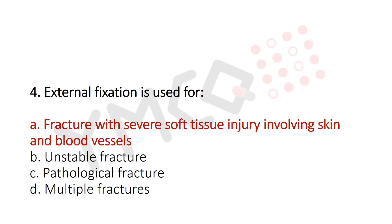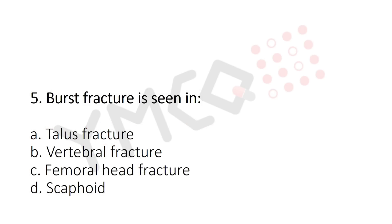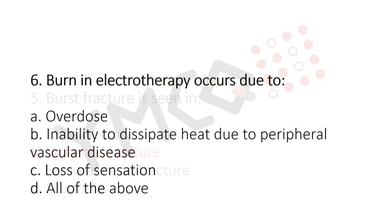Question 5: Burst fracture is seen in — option A: talus fracture; option B: vertebral fracture; option C: femoral head fracture; option D: scaphoid fracture. The answer is option B: vertebral fracture.